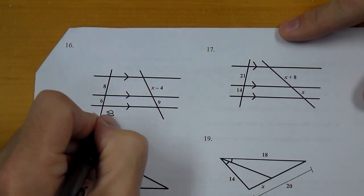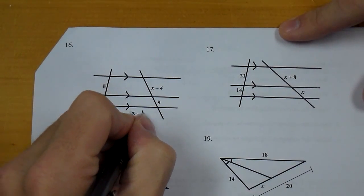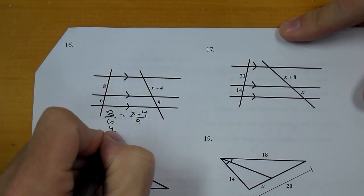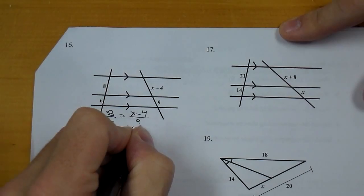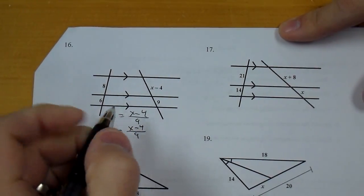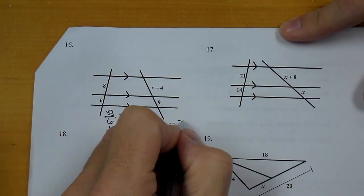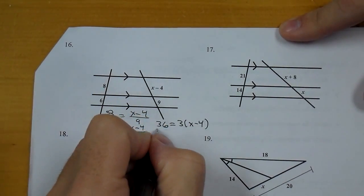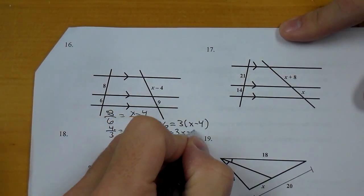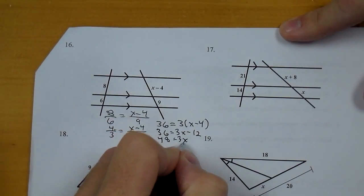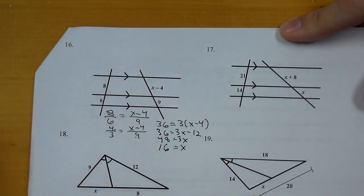For 16, I'm going to go 8 over 6 equals X minus 4 over 9. I'm going to reduce and make that 4 thirds on the left side. So I get 36 from 9 times 4, and 3 times X minus 4. That becomes 3X minus 12. 48 equals 3X, and X is 16.